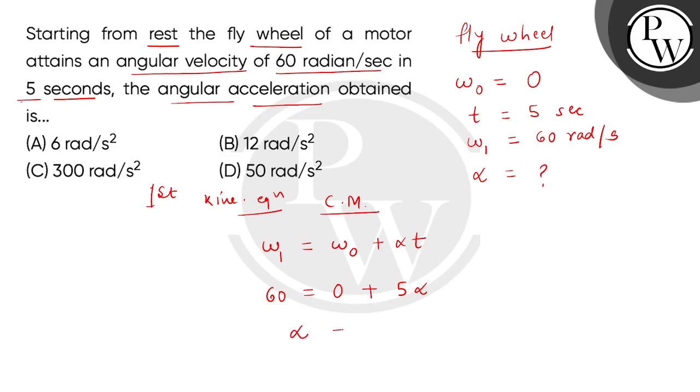Here we get 12, and the SI unit is radian per second squared. So the correct option is option B. Thank you.